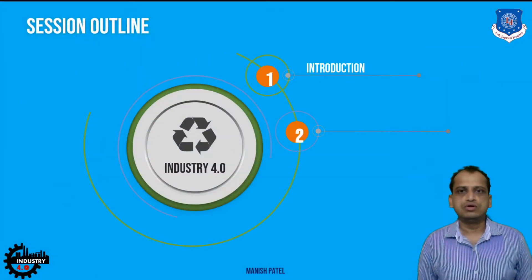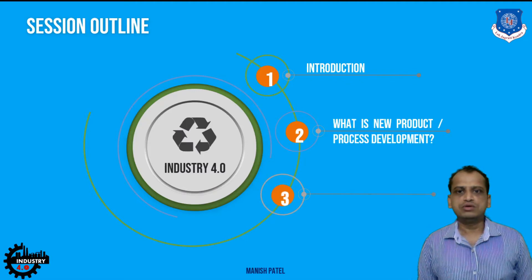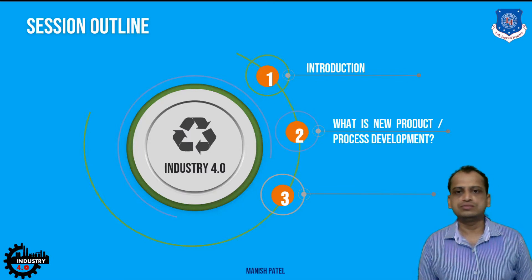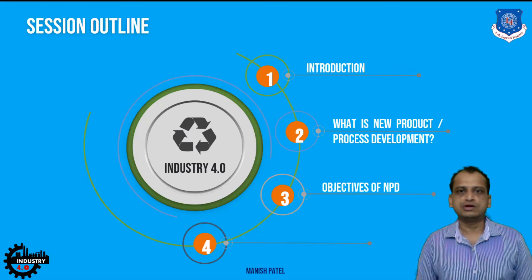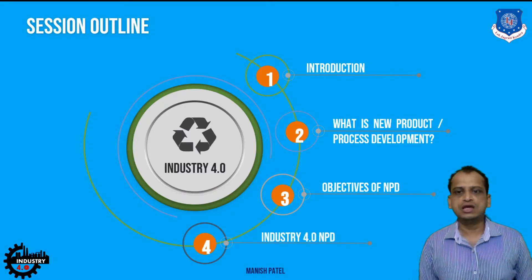We will start with the introduction of new product and process development — what do you mean by it? Then we will look into the definitions pertaining to Industry 4.0, followed by the objectives. What are the objectives for the company if it wants to implement new products or launch new product and process portfolios? And then we will look into Industry 4.0 and product development.